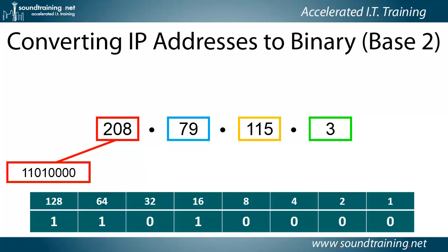Here you can see the 128-bit is turned on, the 64-bit is turned on, and the 16-bit is turned on. So we add 16 to 64, giving us 80, and then add that to 128. 128 plus 80 equals 208, and that's where the byte value of 208 comes from.